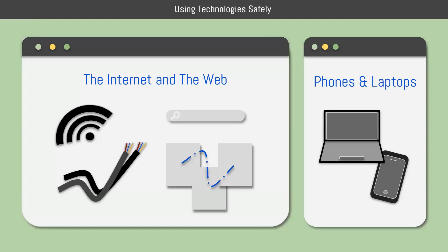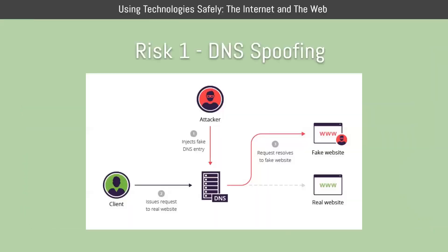We'll begin with explaining the common risks of using the internet and the web. The first risk is Domain Name System spoofing, or DNS spoofing. A DNS attack happens when an attacker introduces fake data into the DNS to cause the server to return an incorrect IP address. The DNS is like the phone book of the internet — it holds all the IP addresses of web pages. When an attacker introduces fake data, they make the server return an incorrect IP address, redirecting the victim to a malicious webpage without their knowledge. The malicious webpage can imitate the intended site and trick the victim into giving away personal information.